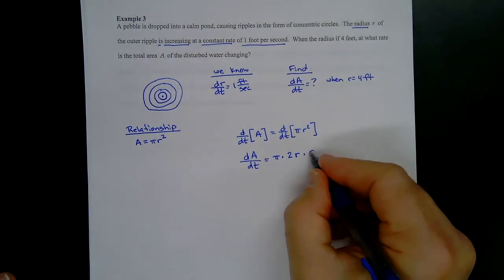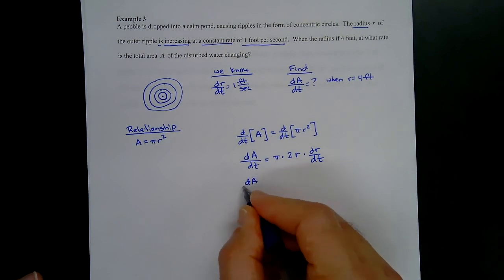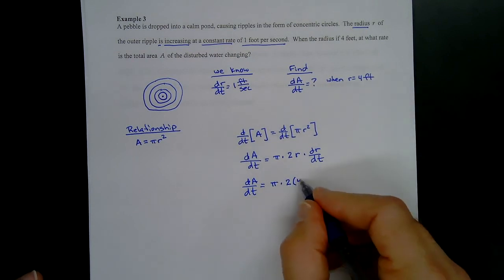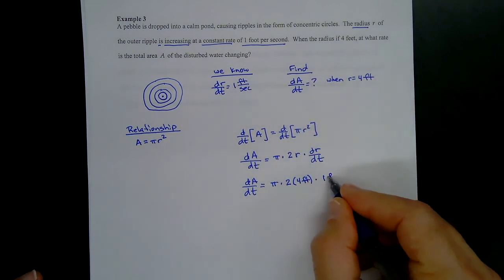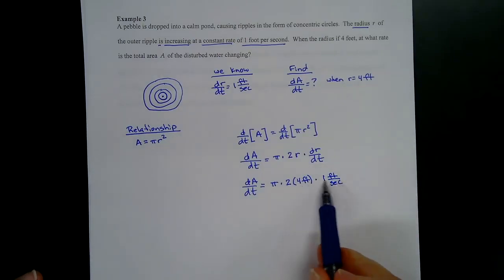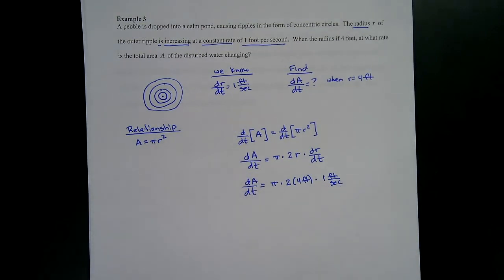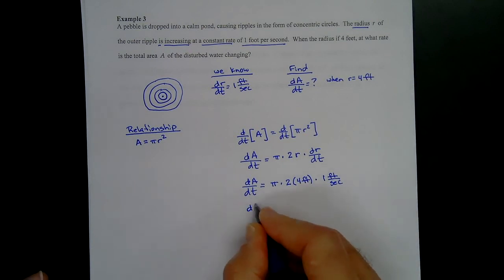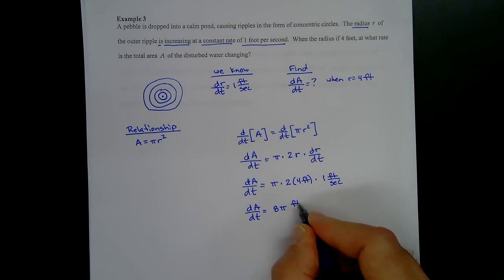Pi is a constant, so the right side becomes pi times 2r times dr/dt by the chain rule. Plugging in: dA/dt equals pi times 2 times four feet times one foot per second. The units work out to feet squared per second. Pi times 2 times 4 times 1 gives 8 pi, so dA/dt equals 8 pi feet squared per second, approximately 25.133 feet squared per second.